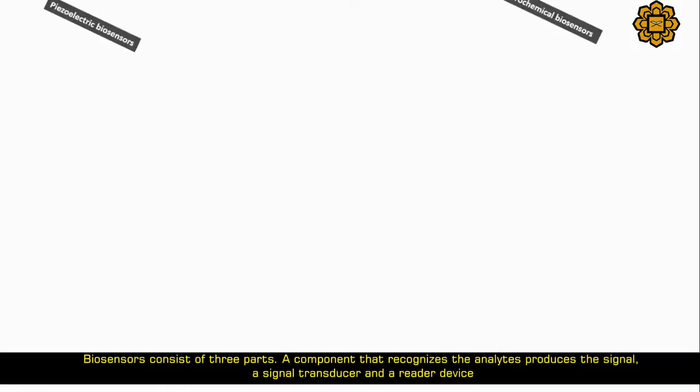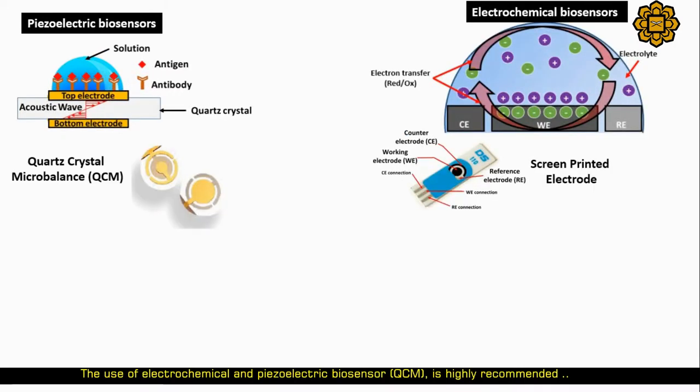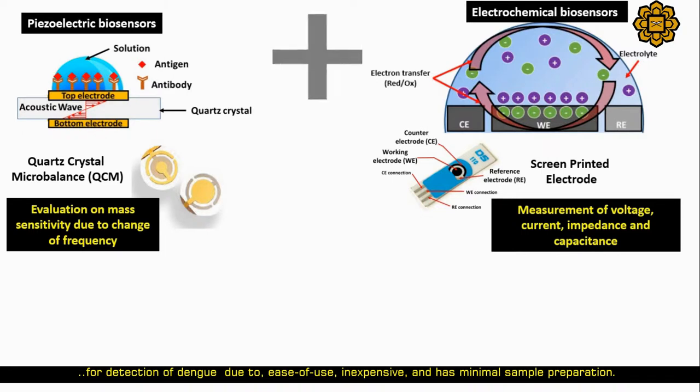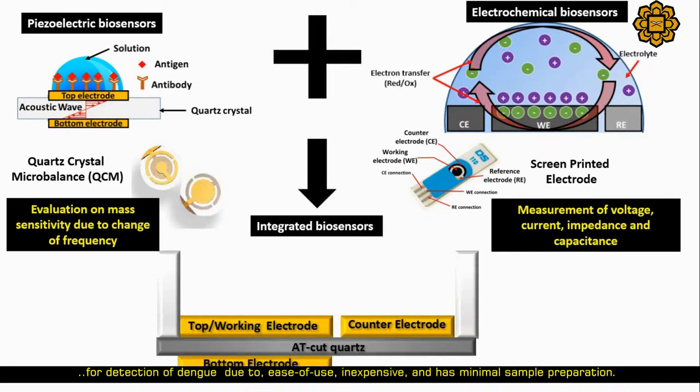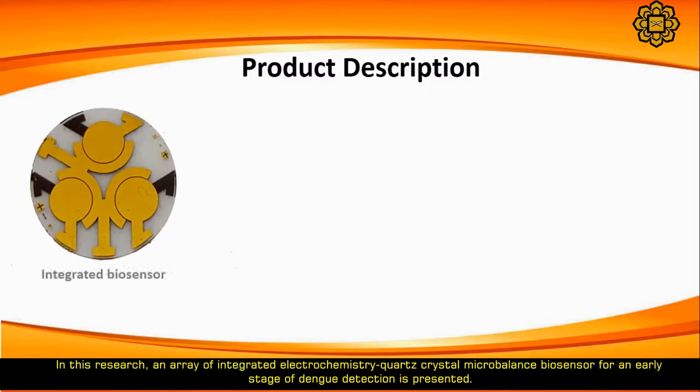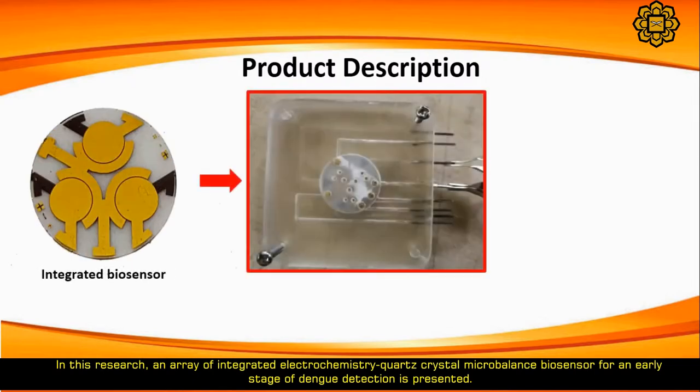The use of electrochemical and piezoelectric biosensor QCM is highly recommended for detection of dengue due to ease of use, low cost, and minimal sample preparation. In this research, an array of integrated electrochemistry quartz crystal microbalance biosensors for early stage dengue detection is presented.